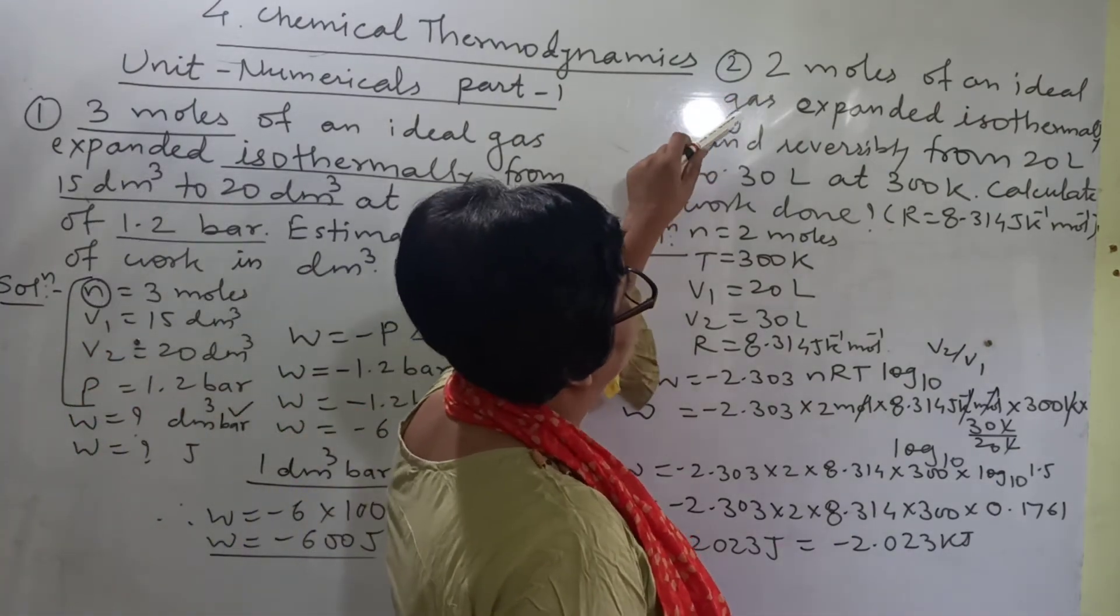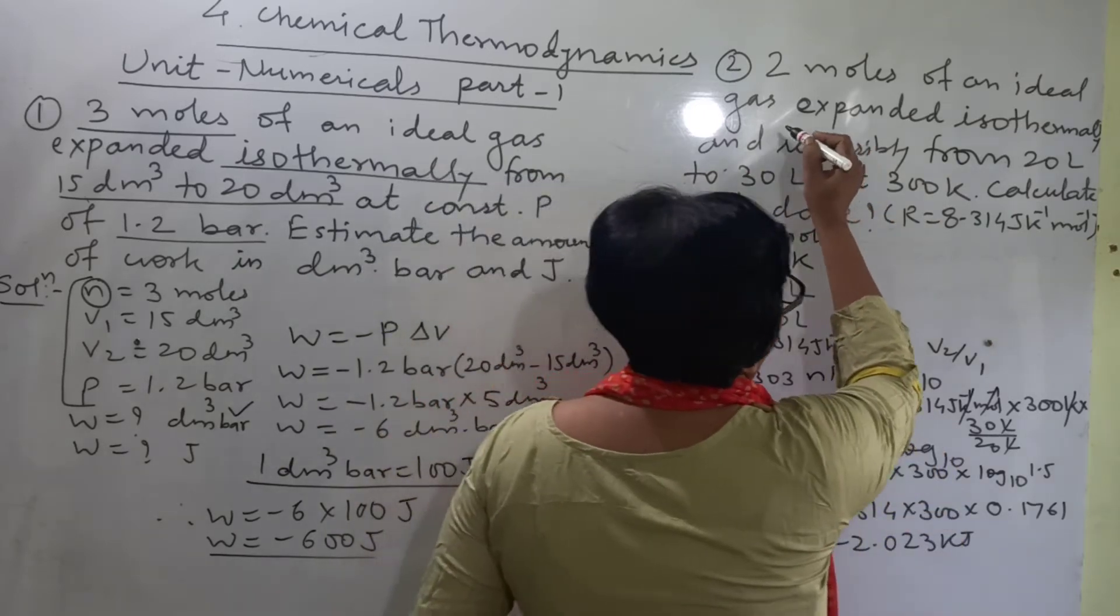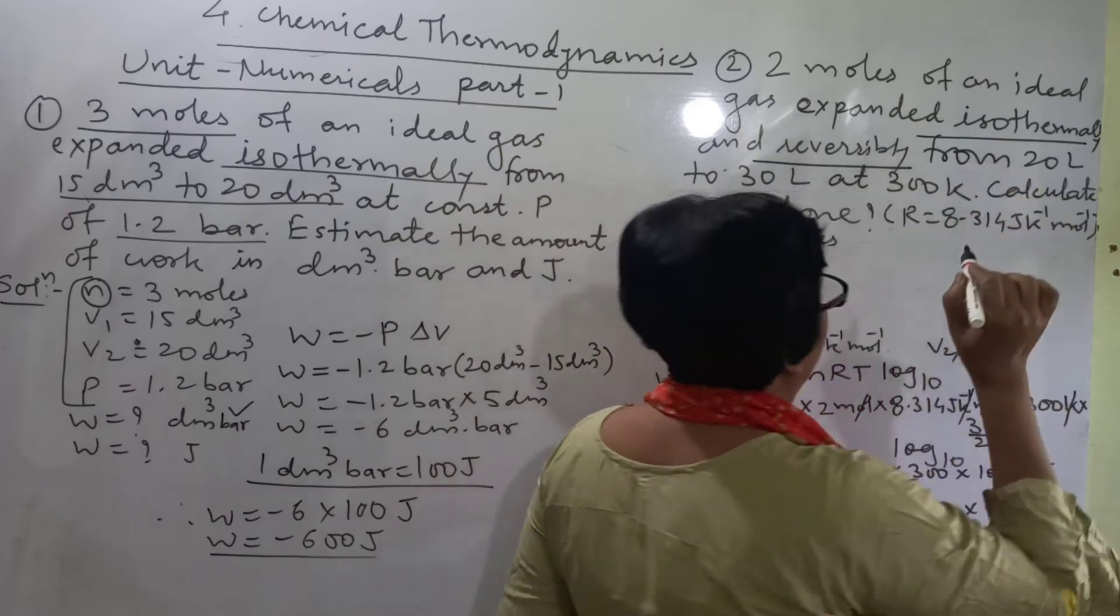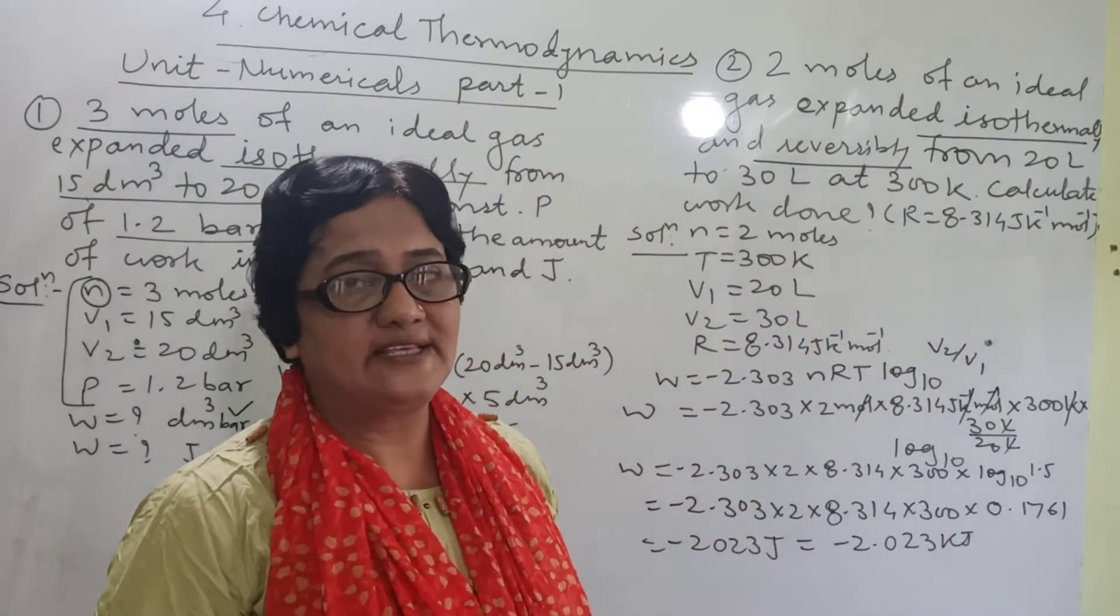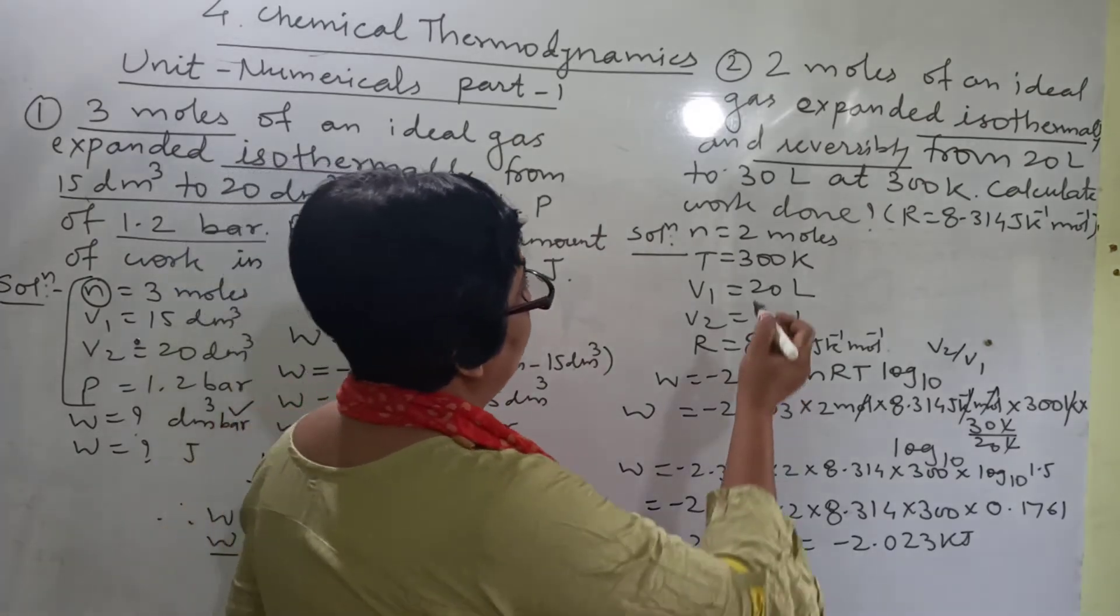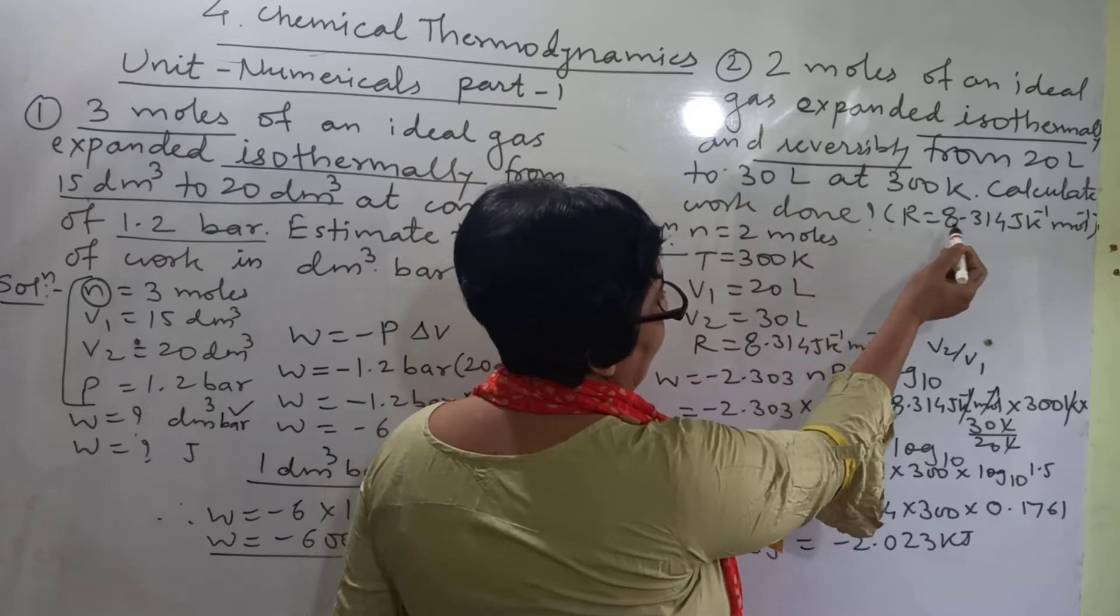2 moles of an ideal gas expanded isothermally and reversibly. Now focus on this word: expansion, isothermal and reversible. And when isothermal reversible expansion is there, you have to calculate the maximum work. From 20 litre to 30 litre at 300 kelvin. Calculate work and R is given.